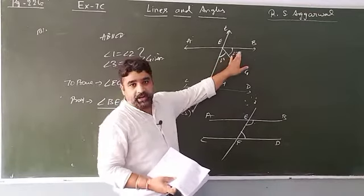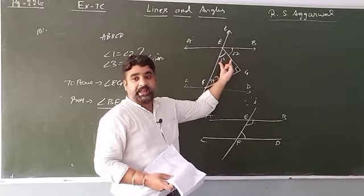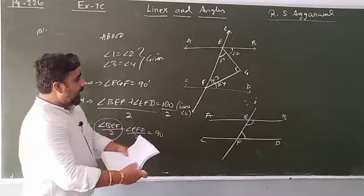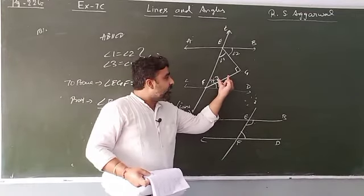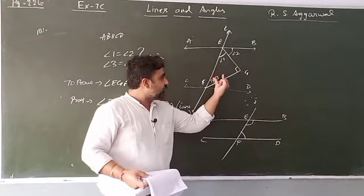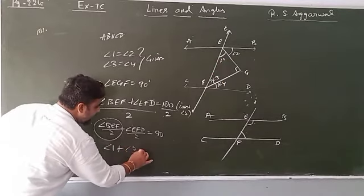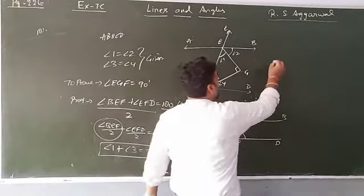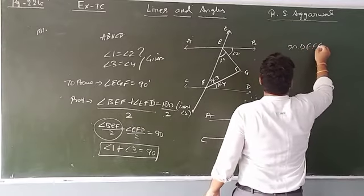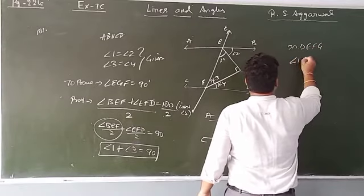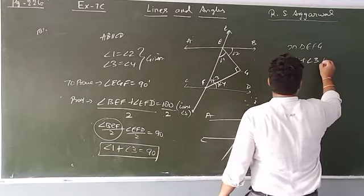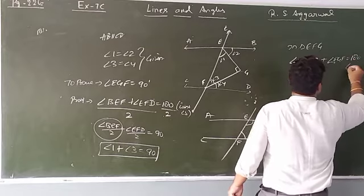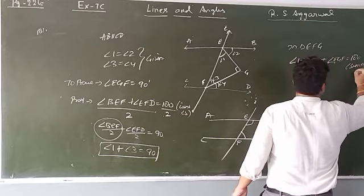This angle is angle 1 and this angle is angle 3, so angle 1 plus angle 3 equals 90 degrees. In triangle EFG, the sum of all three angles equals 180 degrees. Therefore angle 1 plus angle 3 plus angle EGF equals 180 degrees.